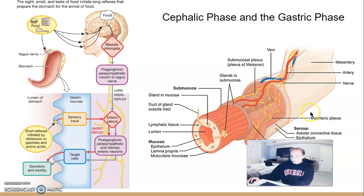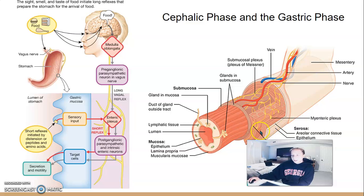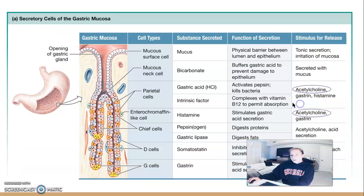The enteric neurons innervate the stomach at two different levels: the submucosa and the myenteric plexus. The yellow lines here represent all of the enteric neurons.